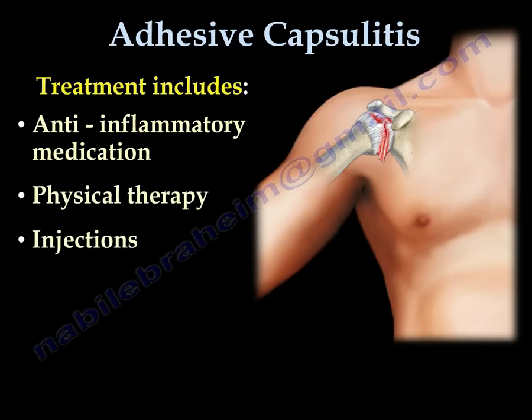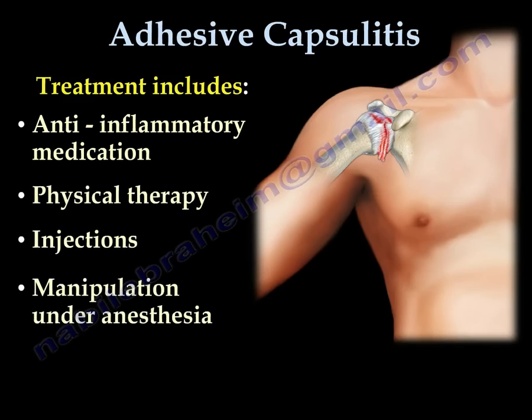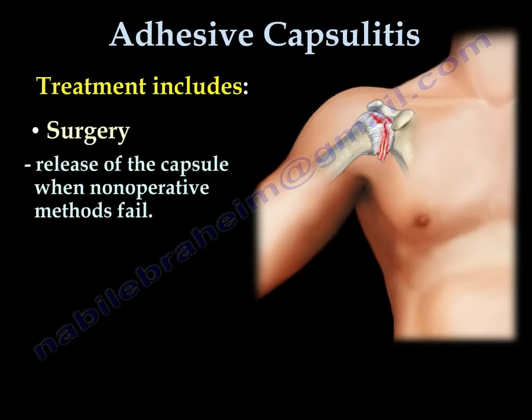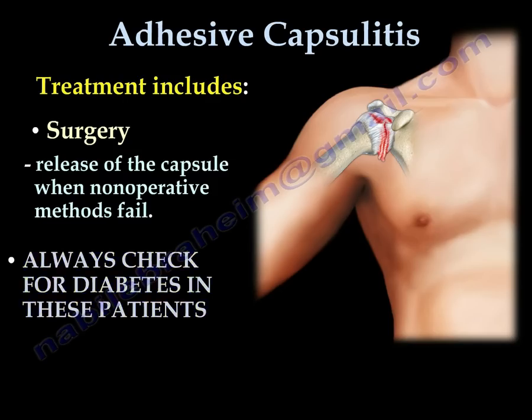Treatment includes anti-inflammatory medication, physical therapy, injections, and manipulation under anesthesia. Care must be taken so the humerus does not break during manipulation. Surgery is done when non-operative methods fail and usually includes release of the capsule. Always check for diabetes in these patients.